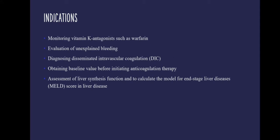The indications for doing a Prothrombin Time test are: 1. Monitoring the patient's status when giving vitamin K antagonists such as warfarin. 2. Evaluation of unexplained bleeding. 3. Diagnosing disseminated intravascular coagulation. 4. Obtaining baseline value before initiating anticoagulation therapy. 5. Assessment of liver synthesis function. 6. To calculate the Model for End-Stage Liver Disease (MELD score) in liver disease.